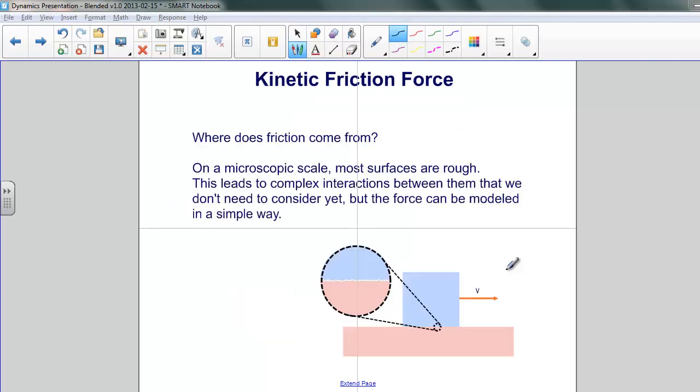You might be wondering where this resistive force friction comes from. Well, let's go back to thinking about a block of sandpaper. The surface of the sandpaper is very rough.